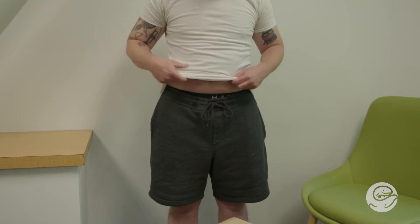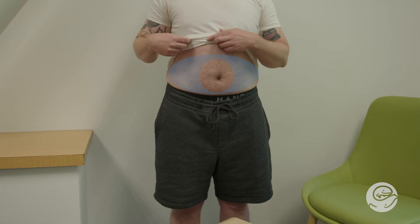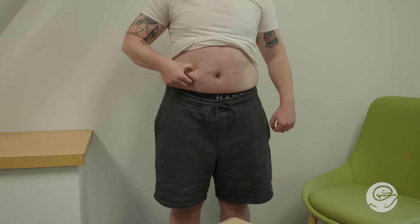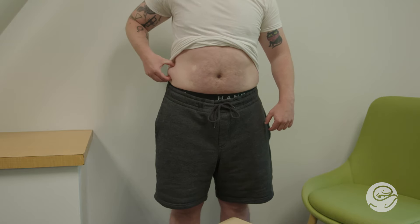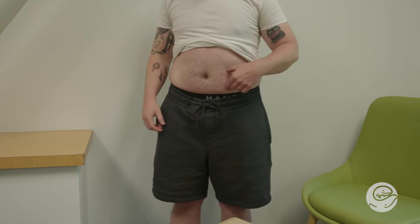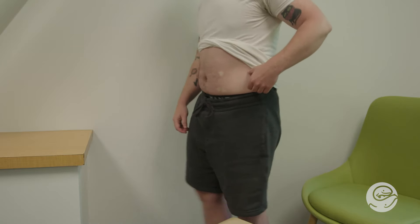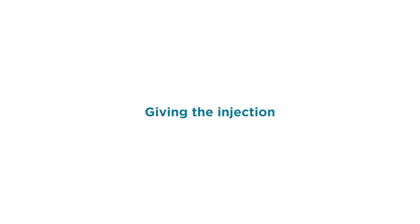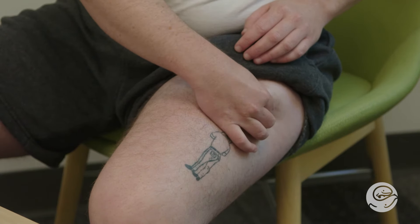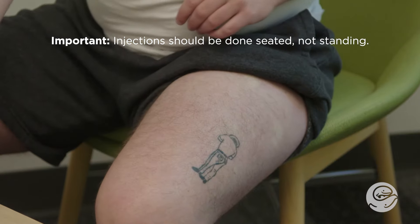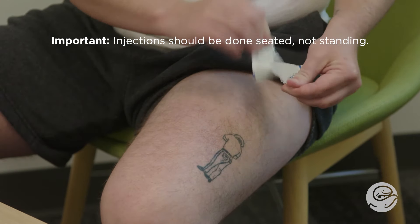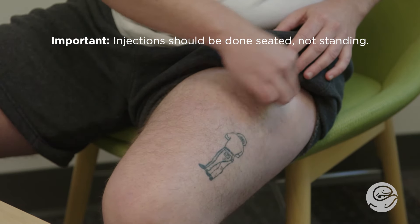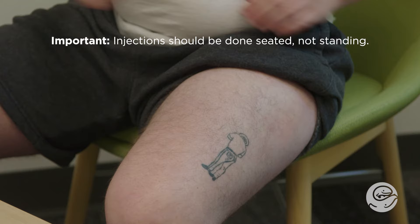If you use your stomach area, remember to stay one inch away from your belly button and avoid your waistline to prevent irritation. Use the area where you can pinch one inch of skin. Clean the injection site with a new alcohol wipe. Let it dry before injecting. Fan it gently to check that the area is dry. Do not touch or blow on the area after it is clean.